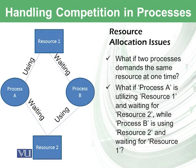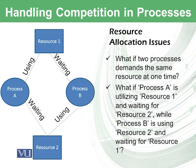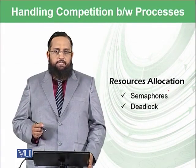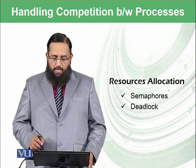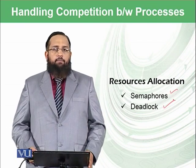I have listed two issues of process allocation and competition here. First, what if two processes demand the same resource at the same time, like a printer or CD player? Second, what if process A is utilizing resource 1 and waiting for resource 2, while resource 2 is being utilized by another process waiting for resource 1 to finish? This means process 1 is waiting for process 2 and process 2 is waiting for process 1. In handling competition between processes, we have two very important concepts: semaphores and deadlocks.